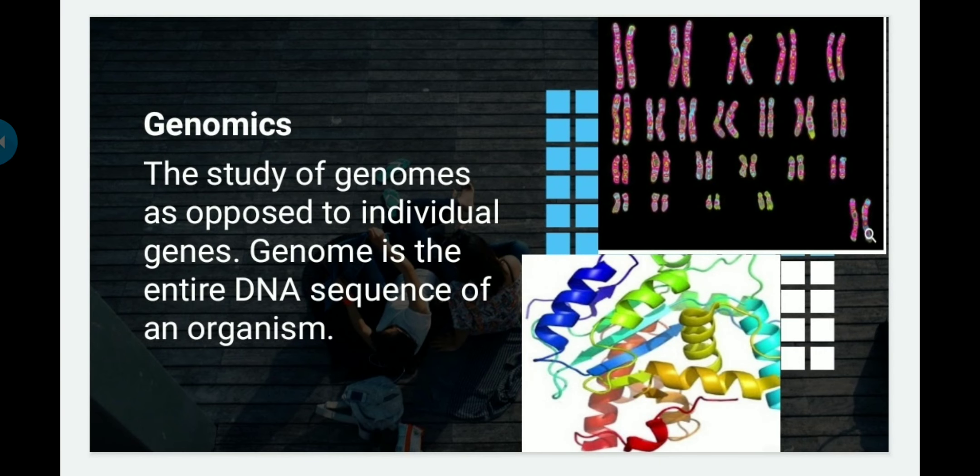Genomics is the study of genomes as opposed to individual genes. The genome is the entire DNA sequence of an organism. We have a chromosome number of 2n (diploid) equal to 46. These things are studied under the branch called genomics.